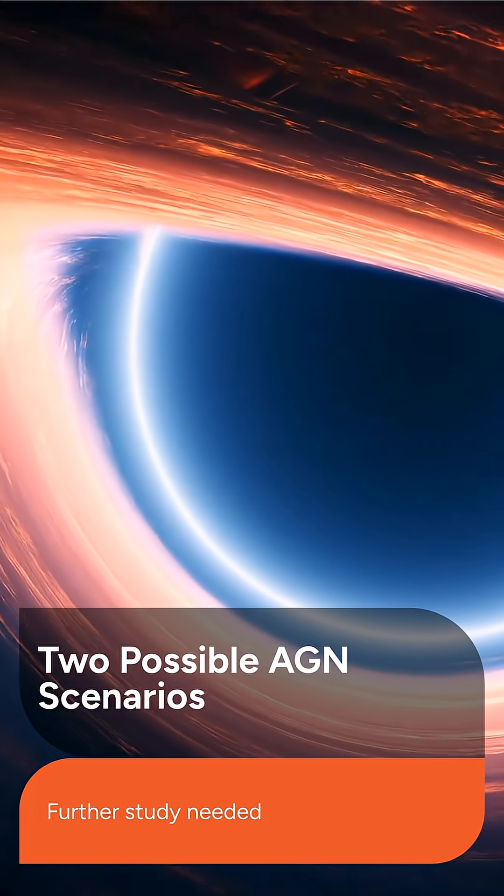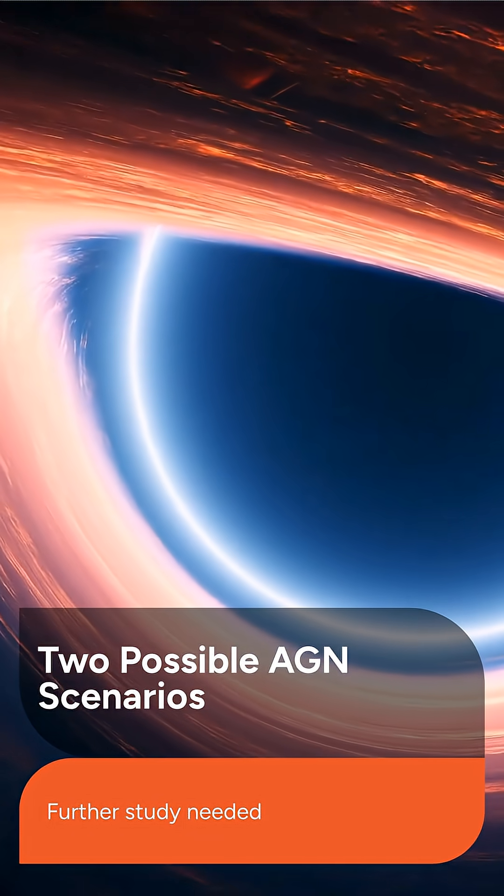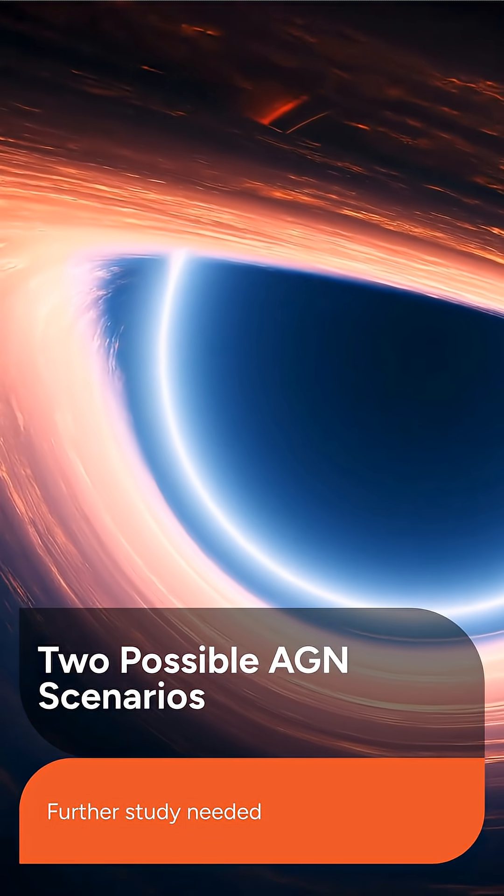Astronomers proposed two possible explanations for this faint AGN. Either it is heavily obscured with soft X-ray emission, or it is a Compton-thick AGN with a reflected component.